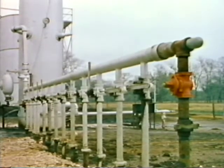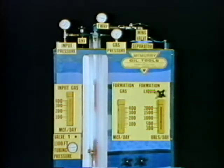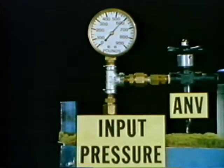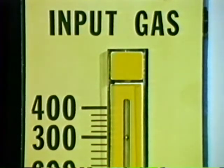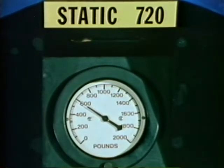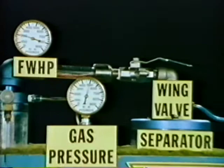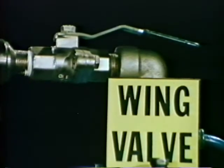Let's talk first about how flowing wellhead pressure affects well performance. Before we vary the flowing wellhead pressure to see what happens, let's look at the basic well conditions. Liquid production is 700 barrels per day. The input gas pressure is 590 PSI, and 300 MCF per day of gas is being injected through the bottom valve at 2,350 feet. Formation gas production is zero. The flowing bottom hole pressure is 600 PSI, and the flowing wellhead pressure is 200 PSI — the total of separator pressure and surface line loss from wellhead to separator. The wing valve is open, and there is no choke in the surface flow line.